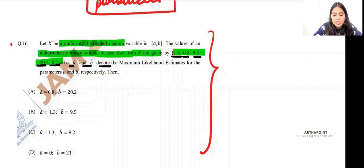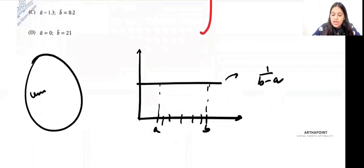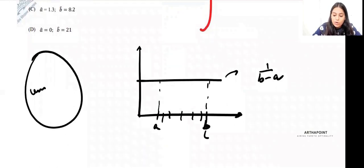Let A hat and B hat denote the maximum likelihood estimates for the parameters. I want to find out what A hat and B hat will be. I don't know what this interval is, but I want to estimate it.